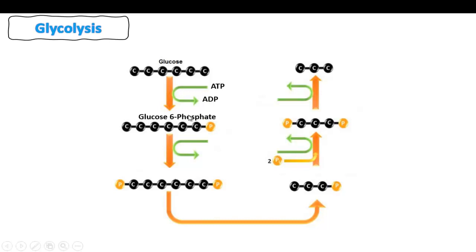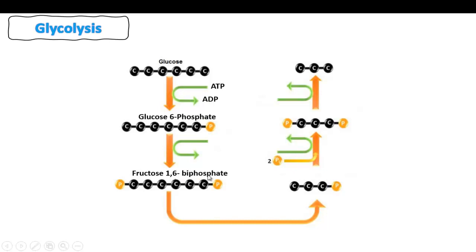Next, glucose-6-phosphate is going to be converted into a new molecule. Comparing the two, we have the same number of carbon atoms and the same phosphate, but another phosphate is added to the first carbon. So we have a phosphate bound to the first carbon and a phosphate bound to the sixth carbon. This new molecule is fructose-1,6-bisphosphate.